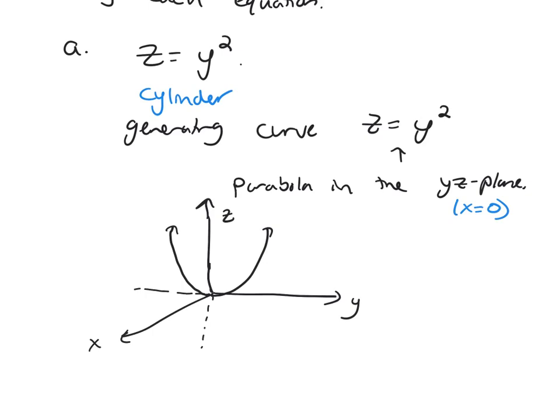And then all you've got to do, that's your generating curve, is move that parabola up and down the X axis. So here I'm going to move it so you're getting this kind of shape here.